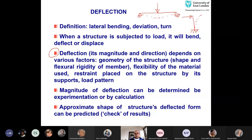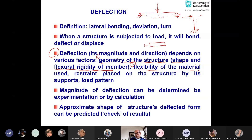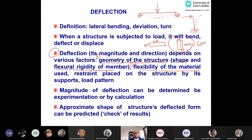Deflection magnitude and direction depend on various factors. One factor is geometry — the shape and flexural rigidity of the member. The second is the flexibility of the material. Normally, deeper beams deflect less. For example, a beam of 100 by 200 mm versus one with a depth of 200 mm — the deeper beam deflects less because it has greater second moment of area. The formula for second moment of area is Bd³/12. So with more second moment of area, the beam deflects less. That is why we prefer deeper beams in reinforced concrete or steel, and square columns in the case of columns.